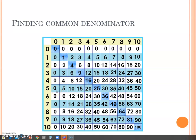Here's how to find the smallest common denominator using a times tables chart. This is the chart I've got handy. You might want to have one that has bigger numbers.